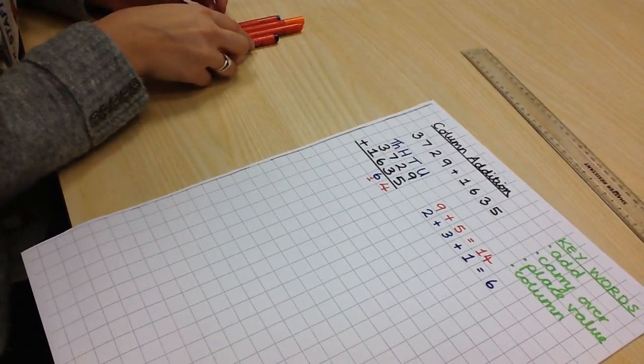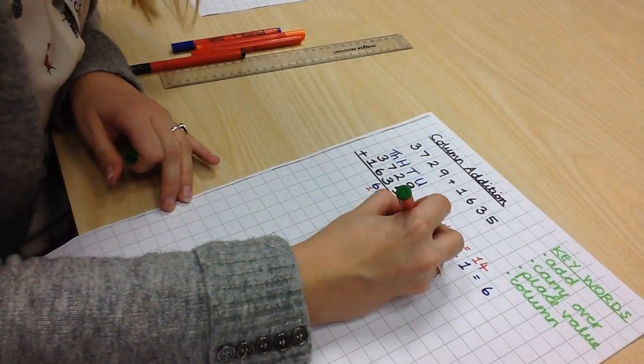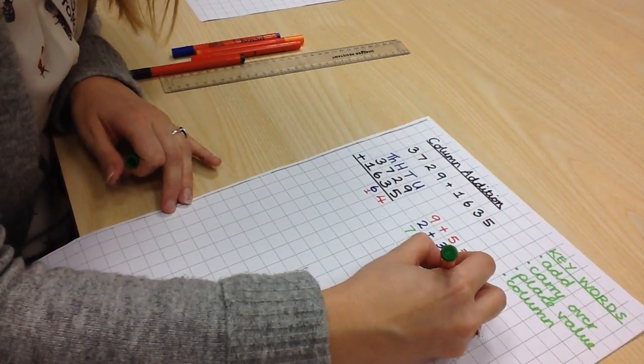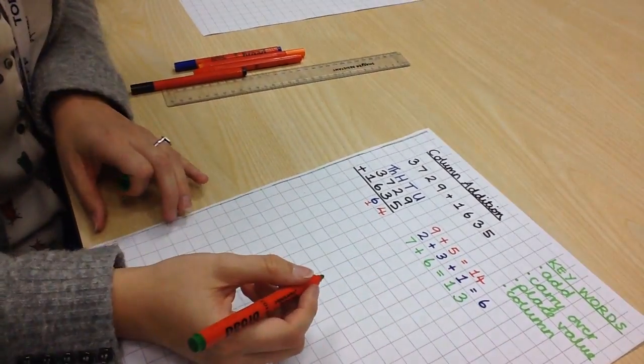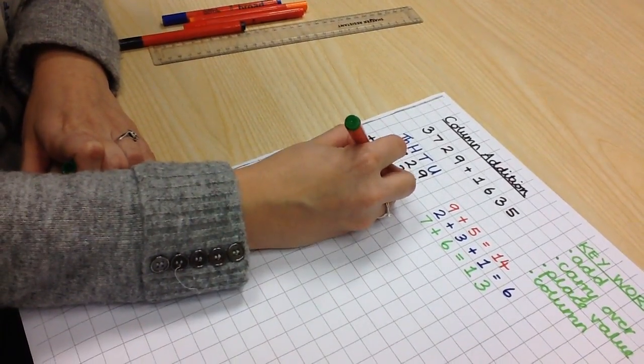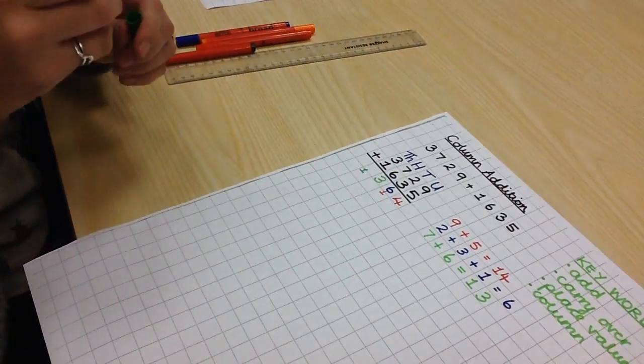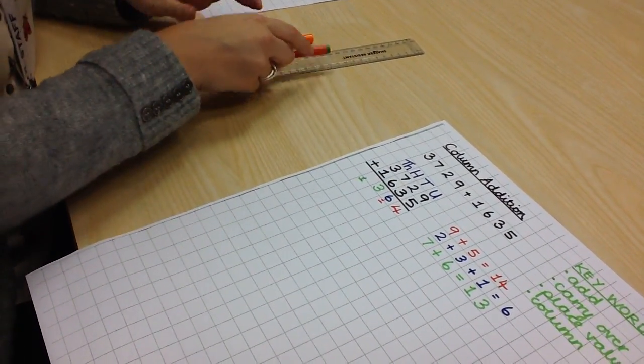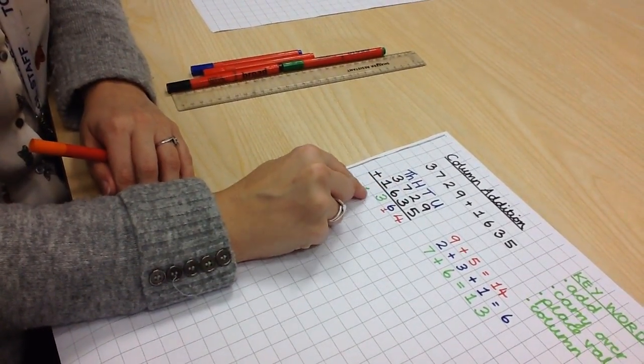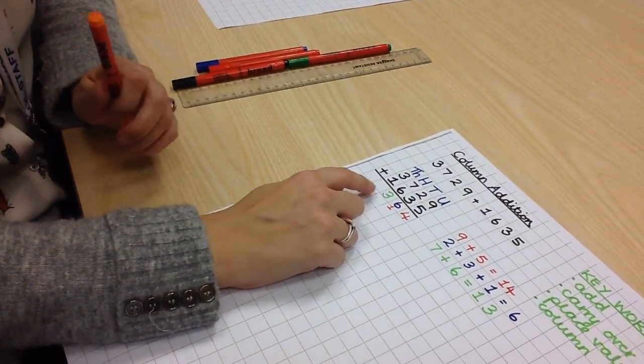We then move over to the hundreds column. 7 add 6 equals 13. Once again we are going to carry over here. The 3 enters into the hundreds column. The 1 enters into the thousands, just written small underneath again. We understand this as 700 plus 600 equals 1,300. So, the 300 enters the hundreds column and the thousands goes over.